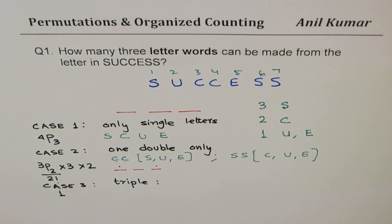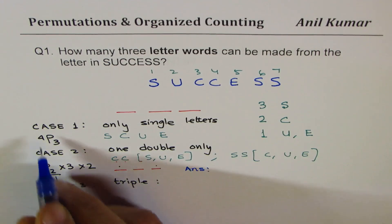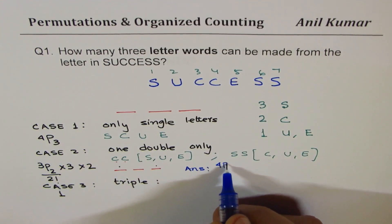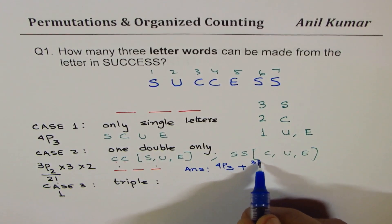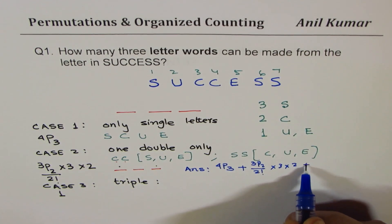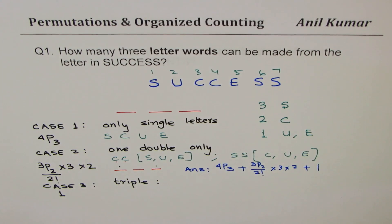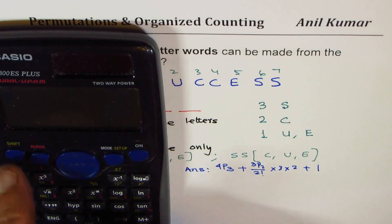Now combining all, we get our final answer, right? So we can combine all this. So we get our answer as total of all this, which is 4P3 plus 3P2 divided by 2 factorial times 3 times 2 plus 1. You get the idea, right? Let's calculate and write down the answer.